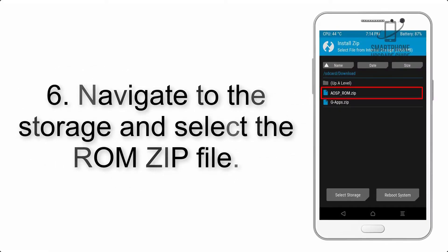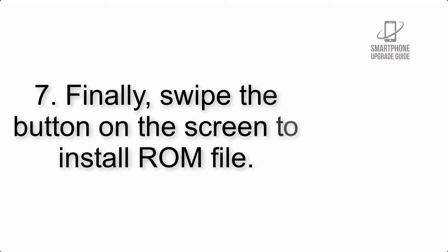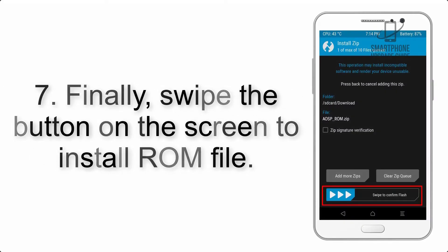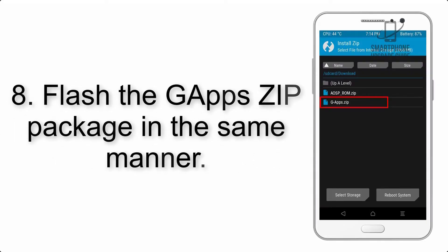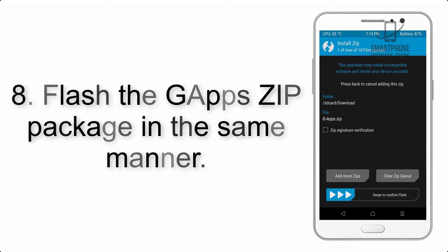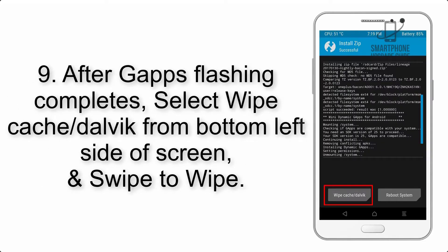Step 5: go back to the recovery main screen and tap on the Install button. Step 6: navigate to the storage and select the ROM zip file. Step 7: swipe the button on the screen to install the ROM file.